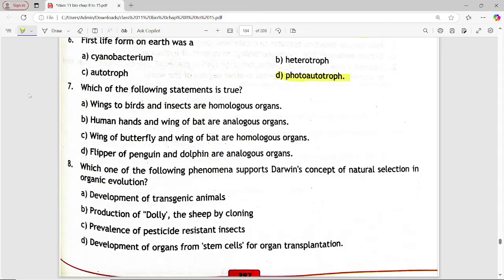Next is, which of the following statement is true? Options are, wings to bird and insects are homologous organ, human head and wing of bat are analogous organ, wing of butterfly and wing of bat are homologous organ, and flipper of penguin and dolphin are analogous organ. Answer is option D, flipper of penguin and dolphin are analogous organ.